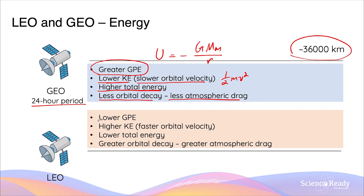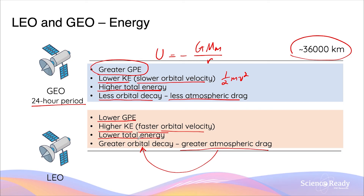LEO orbits have a lower gravitational potential energy because of their smaller radius. Due to that smaller radius, they also have a faster orbital velocity, giving them a higher kinetic energy. But compared to geostationary orbits, they have a lower total energy. As discussed earlier, due to the smaller altitude or orbital radius, there is a greater amount of atmospheric drag from air resistance, which causes greater orbital decay. This is why LEO satellites often require reboosting to regain lost kinetic energy and maintain stable orbits.